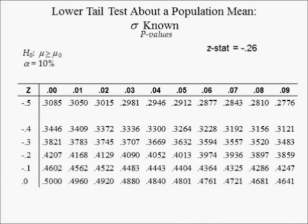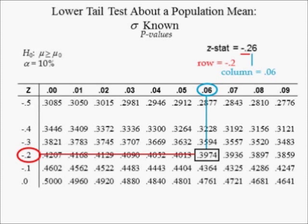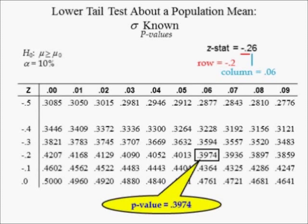Suppose instead the sample data yields a Z statistic equal to negative 0.26. The value in row negative 0.2 and column 0.06 is 0.3974. Since the probability that Z is less than or equal to this number is equal to 0.3974, the P-value is 0.3974.